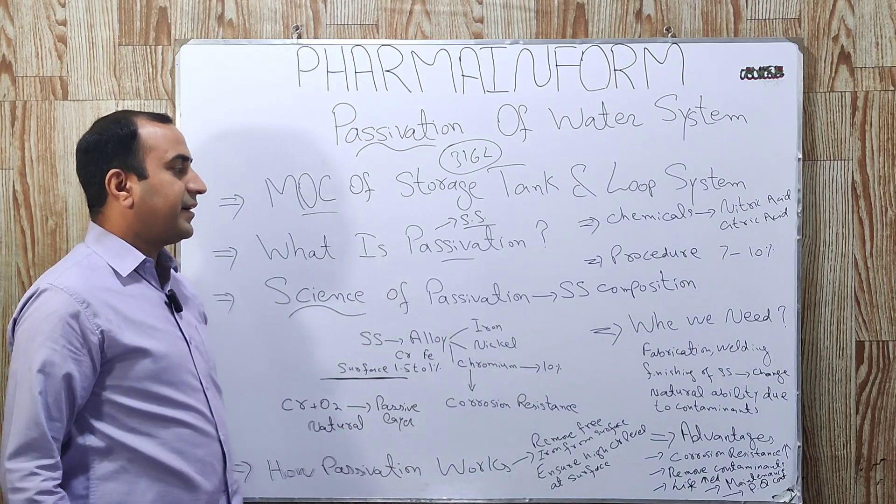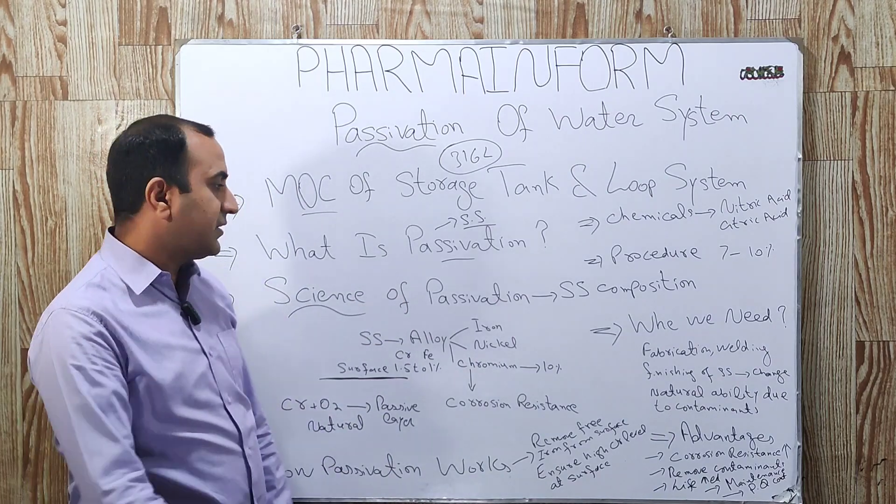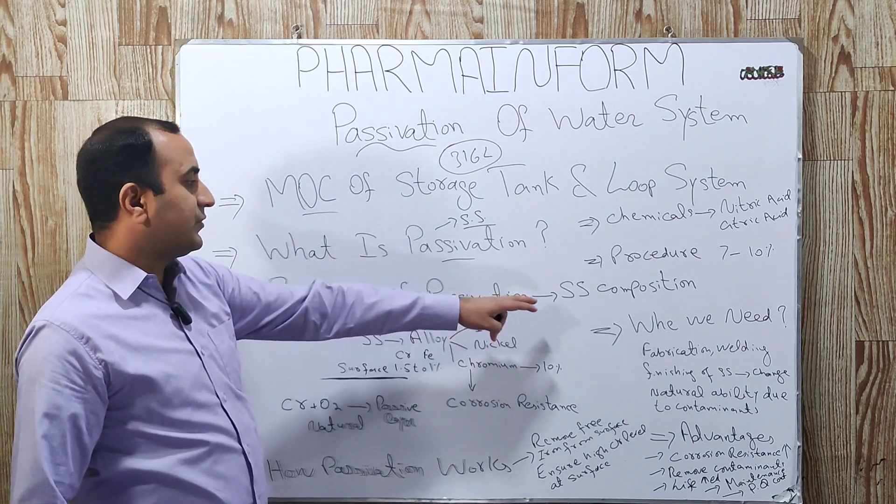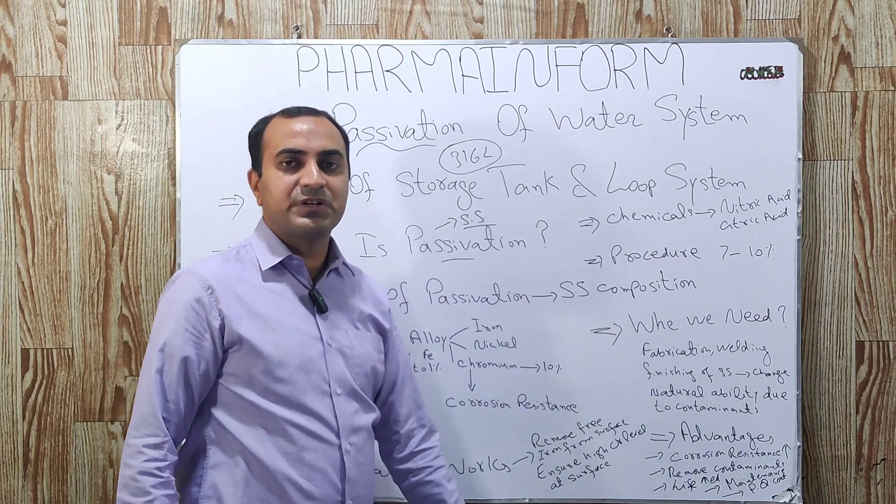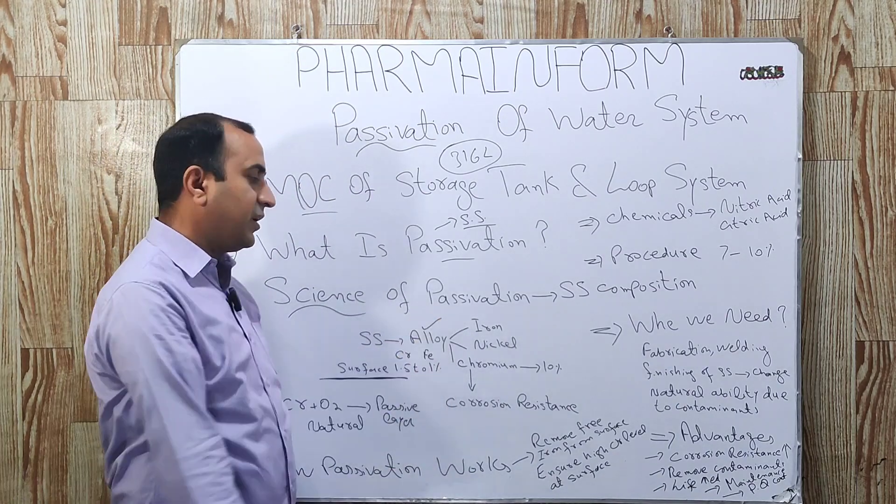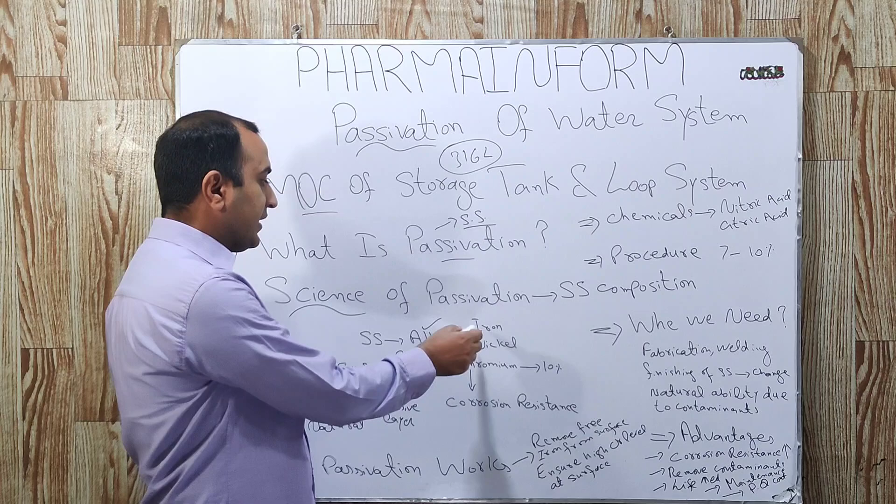To understand complete about passivation, let's have a look over science of passivation. For this, we will discuss composition of stainless steel. We know that stainless steel is an alloy and it is composed of mainly iron, nickel and chromium.